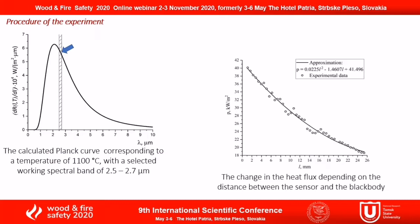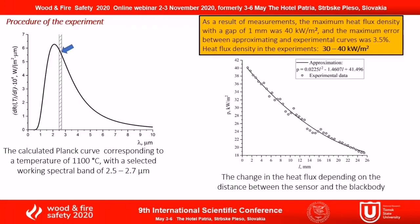Using a control unit, the temperature of the black body radiator was preliminarily set to 1100 Celsius degrees. Here on the slide you can see the calculated Planck curve for temperature with a selected working spectral range. We can see that using a 2.5 to 2.7 micron filter allowed recording of the infrared radiation of the highest intensity for the specified temperature of the radiator.